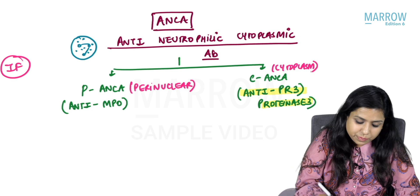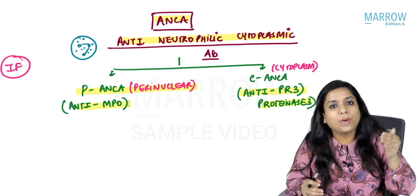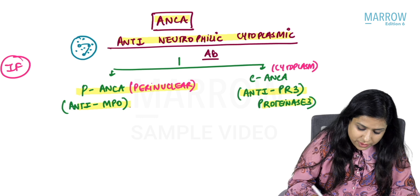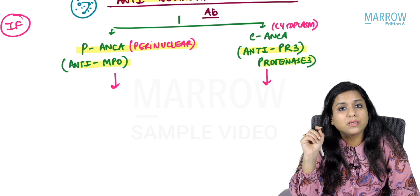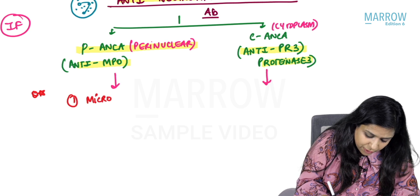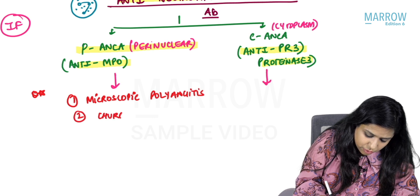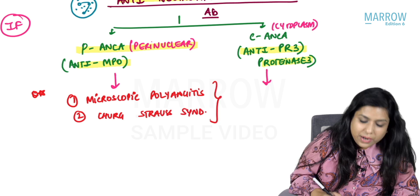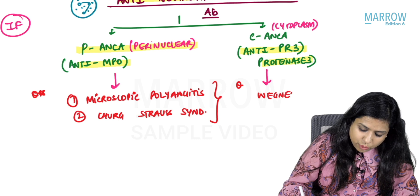The key point to take home is which vasculitis are PANCA positive and which are CANCA positive — this is a very important MCQ. PANCA positive vasculitis: microscopic polyangiitis and Churg-Strauss syndrome. These two entities are PANCA positive, whereas the vasculitis which is CANCA positive is Wegener's granulomatosis.